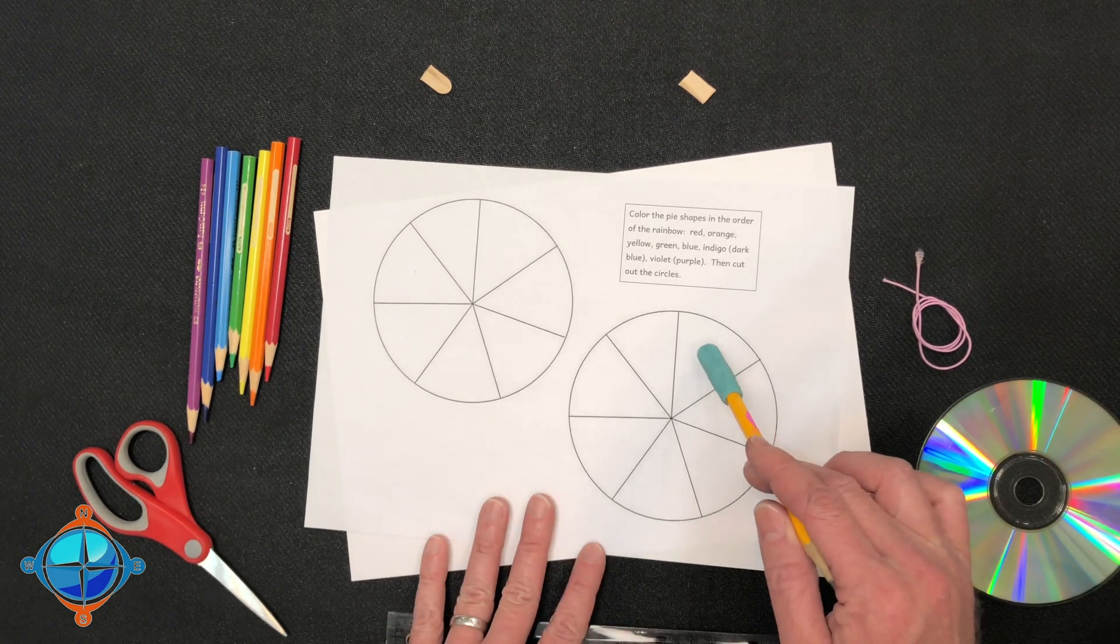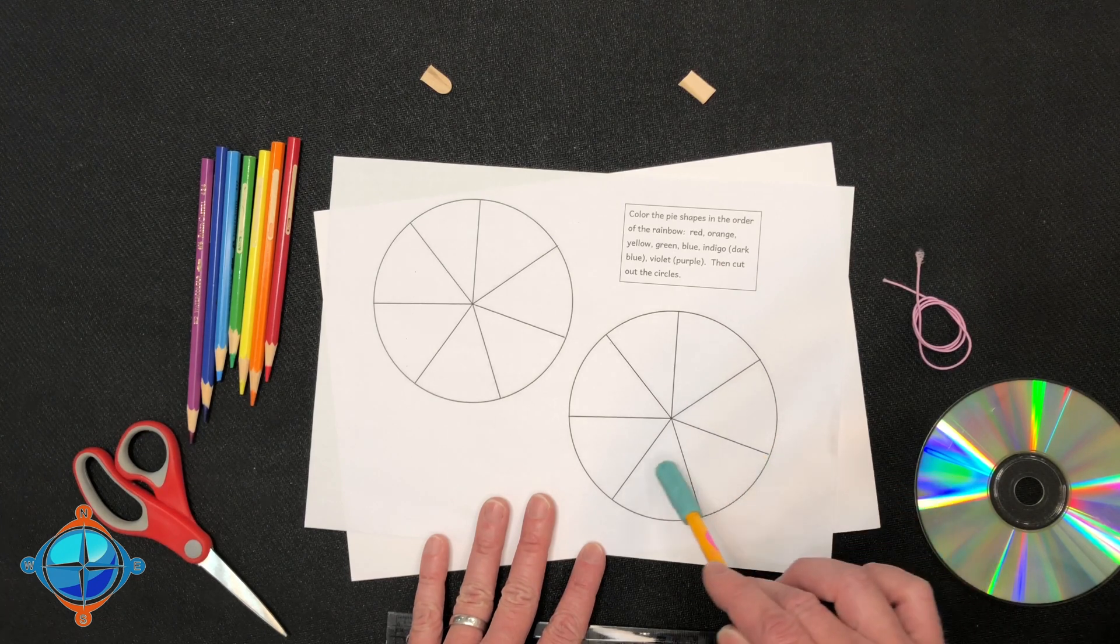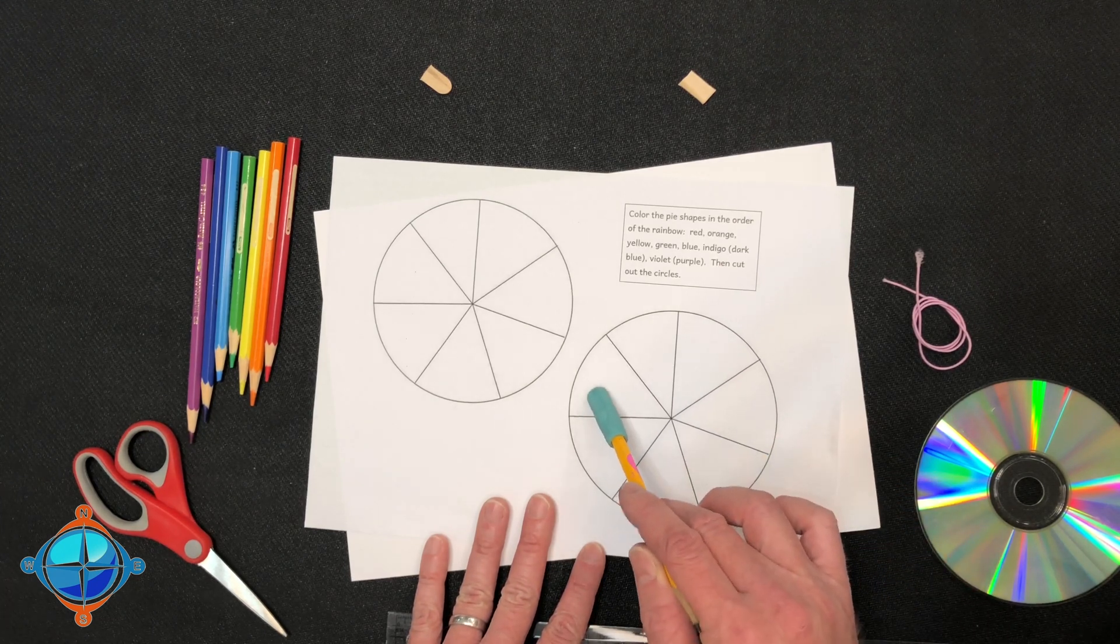So we're going to start with red, orange, yellow, green, blue, indigo, and violet.